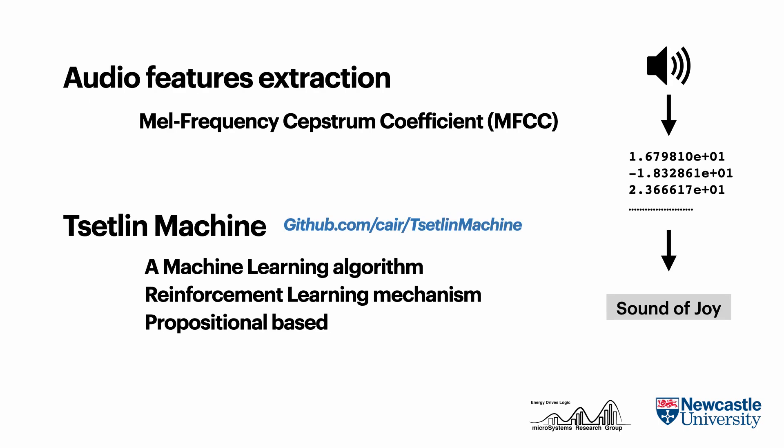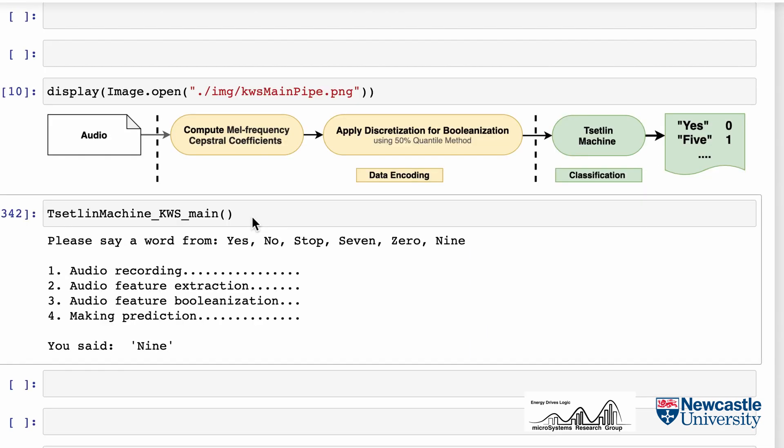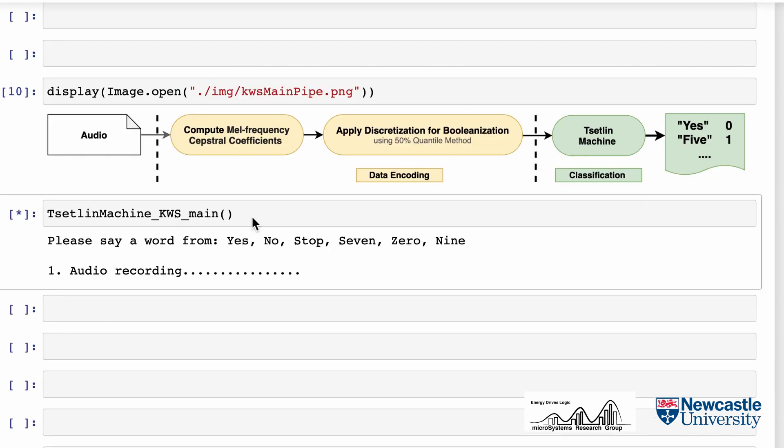A quick overview of our pipeline: we use audio feature extraction techniques to extract features from the audio file, then we feed the features into the Settler machine for classification and training.